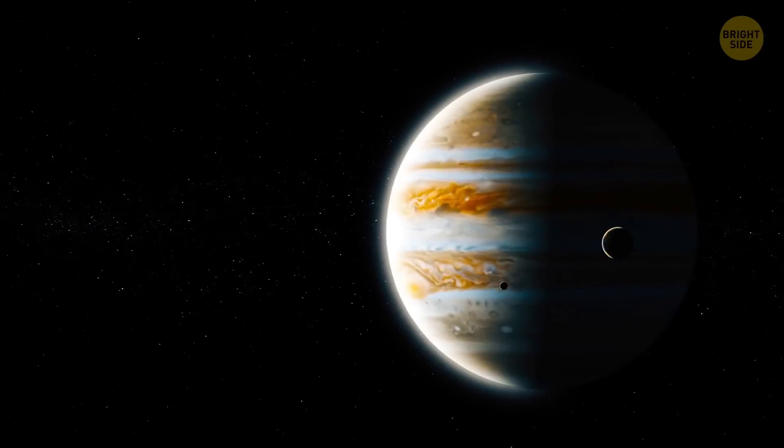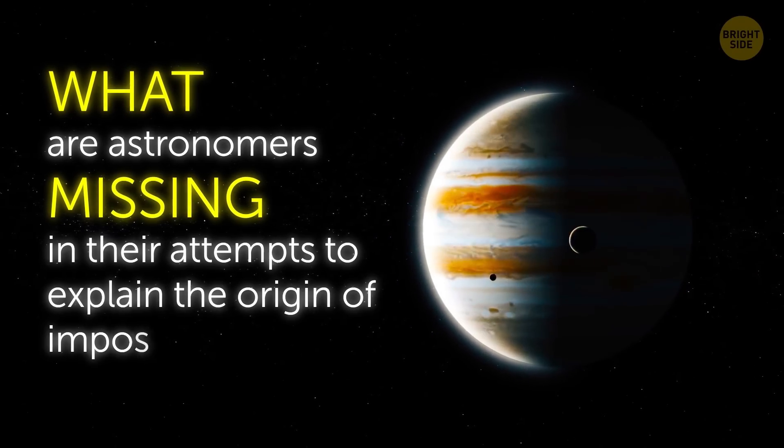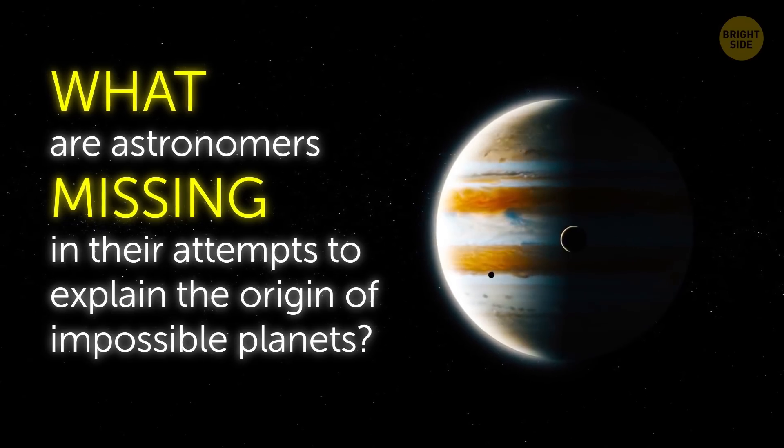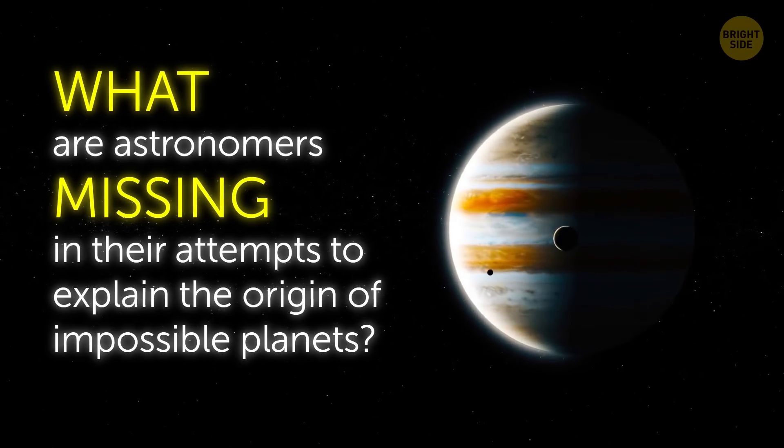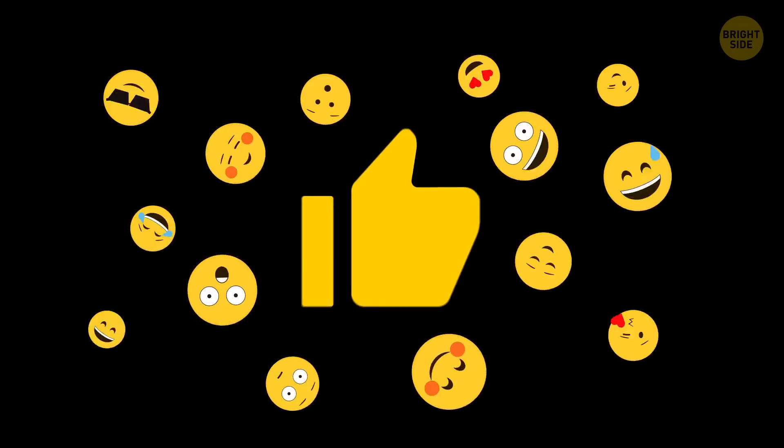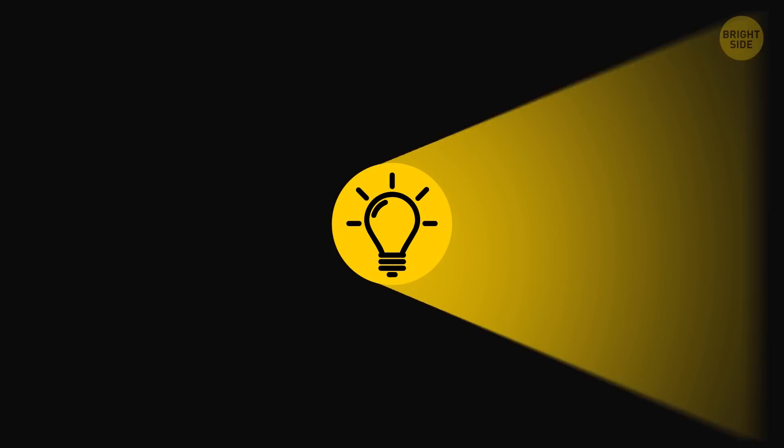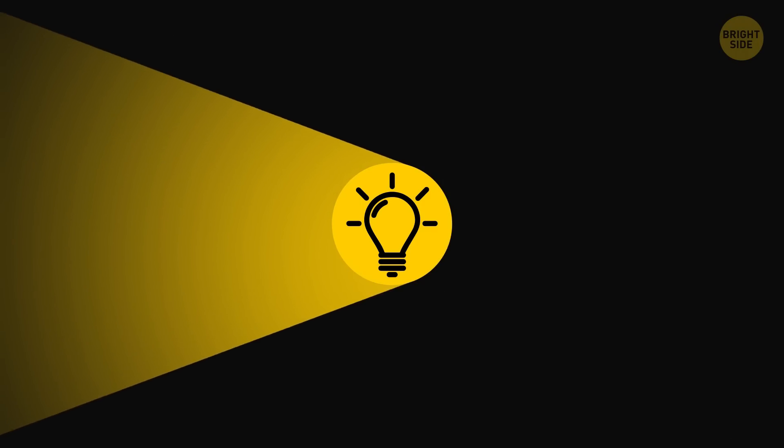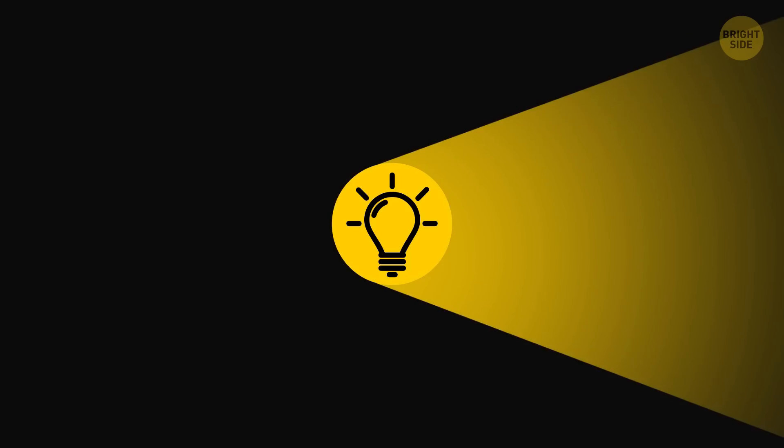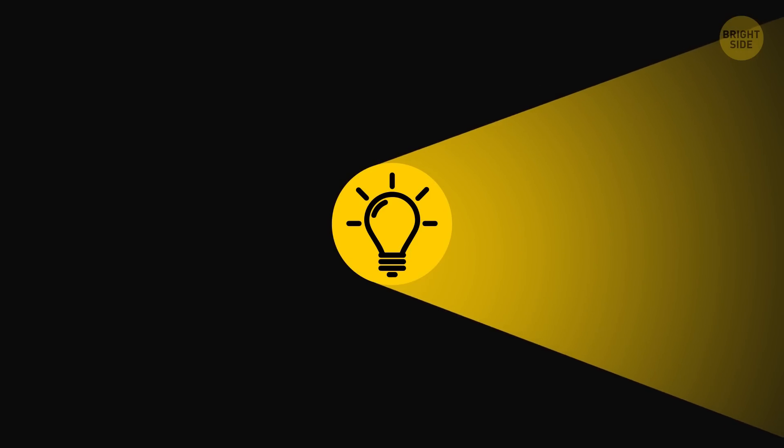So, what do you think? What are astronomers missing in their attempts to explain the origin of impossible planets? Who knows? Maybe your idea is the key to a better understanding of the universe. Let me know down in the comments. If you learned something new today, then give this video a like and share it with a friend. But hey, don't go star-tracking just yet. We have over 2,000 cool videos for you to check out. All you have to do is pick the left or the right video, click on it, and enjoy. Stay on the Bright Side of life!